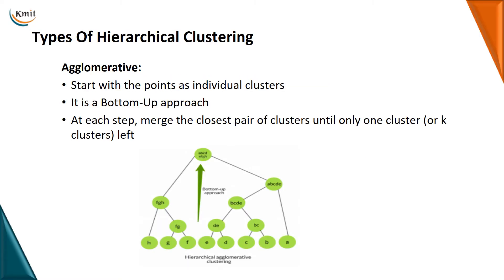The agglomerative method starts with points as individual clusters — it's a bottom-up approach — and at each step merges the closest pair of clusters until only one cluster is left. As I told you, it's a bottom-up approach: at the bottom you can see all the data points individually, and going up they are combined together, finally forming a single cluster. That is the agglomerative method.